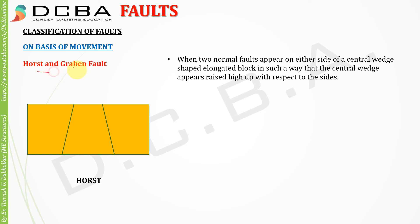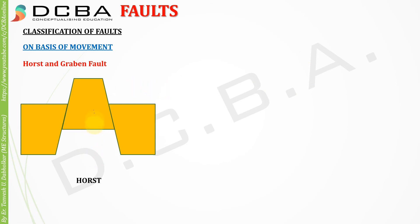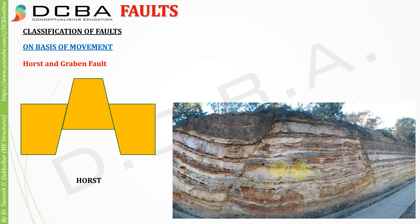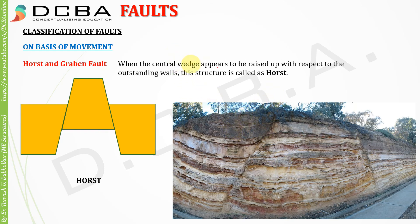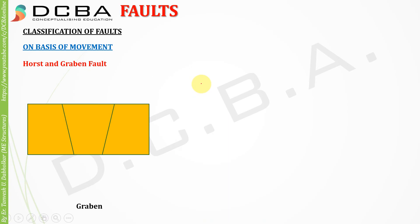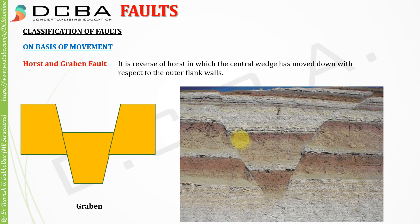Horst and graben faults: when two normal faults appear on either side of a central wedge-shaped elongated block such that the central wedge appears raised high up with respect to the sides, this structure is called a horst. You can see in the image how the central wedge has moved upwards relative to the two outer walls. Graben is the reverse of horst — the central wedge has moved downwards with respect to the outer flank walls.